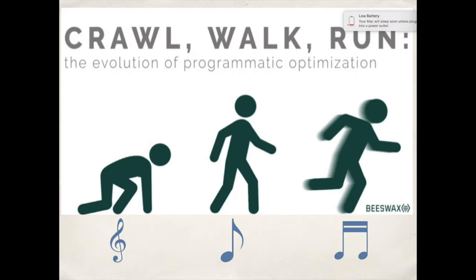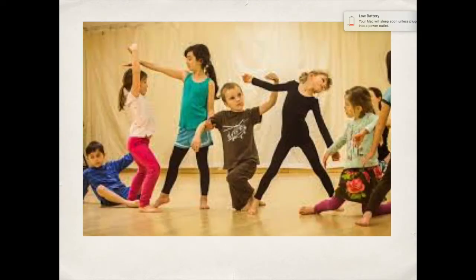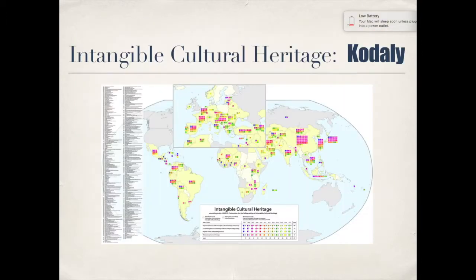The Kodaly Method gained international attention being established in the Intangible Cultural Heritage by UNESCO, which establishes its lists with the aim of ensuring better protection of important intangible cultural heritages worldwide and the awareness of their significance. Elements inscribed are deemed the significant bastions of humanity's intangible heritage, the highest honor on the world stage. In 2016, the method was inscribed in UNESCO's Intangible Cultural Heritage list. The takeaway from the Kodaly Method is the great success that can be achieved by teaching in the traditional style of a culture.